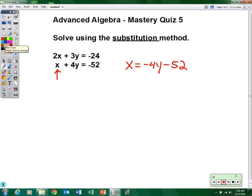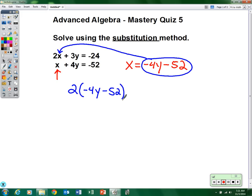Now substitute what x equals into the other equation. So we're going to take this and substitute it into the other equation for x. So you've got to rewrite the problem: 2 times negative 4y minus 52, close it, plus 3y equals negative 24.